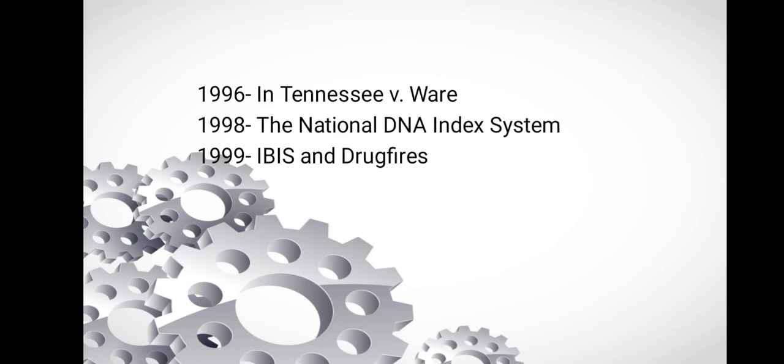In the year 1998, the National DNA Index System, enabling interstate sharing of DNA information to solve crimes, is initiated by the FBI. In 1999, IBIS and Drugfire are integrated by the FBI and ATF, creating the National Integrated Ballistics Identification Network (NIBIN).